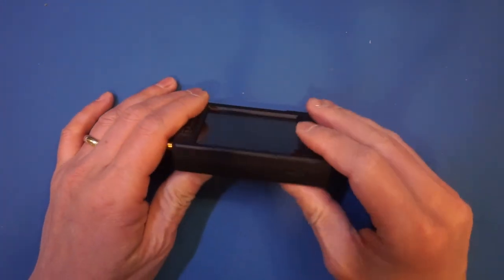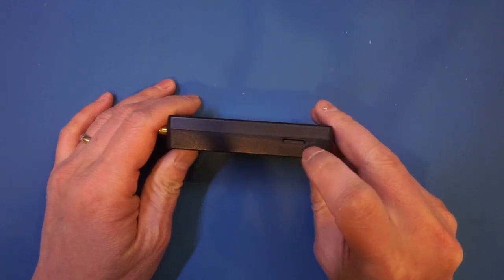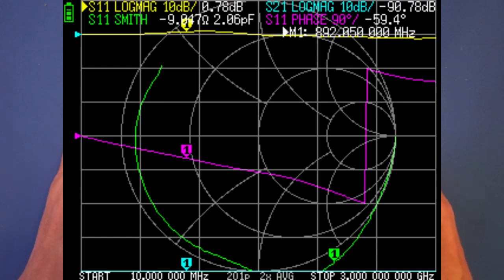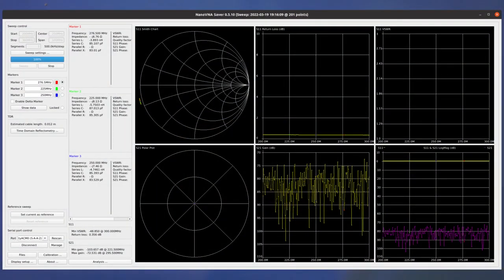One feature I like a lot about this Light VNA is the inclusion of a micro SD card slot. You can use it to save screen images, which is quite handy. Of course, you can always use computer software such as the Nano VNA Saver to do this. By the way, Nano VNA Saver works with this Light VNA quite nicely.